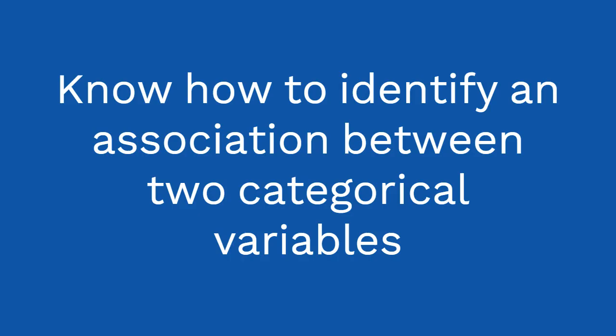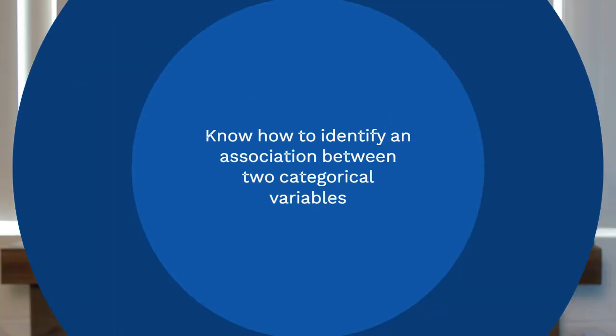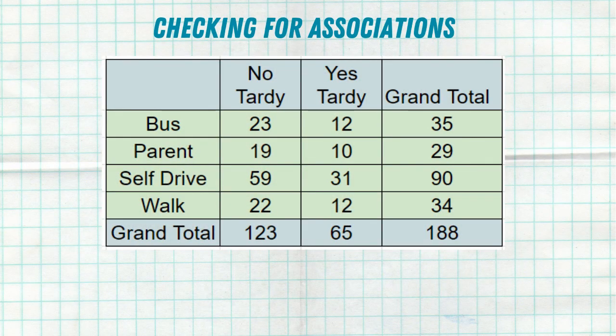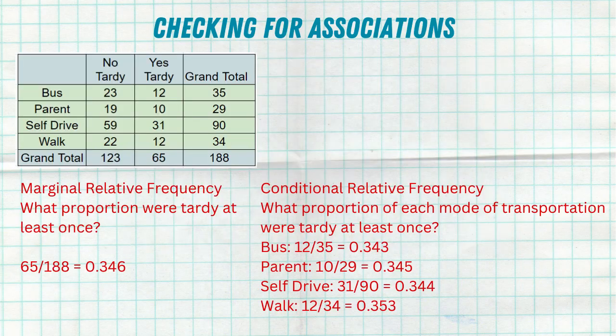Tip number two: know how to determine if there is an association between two categorical variables by looking at a two-way table. This is an extremely important topic that will definitely be on your Unit 2 test and the AP exam. Going back to the tardy example — looking at kids that are tardy, not tardy, and how they got to school — we see all the numbers here. It starts with knowing your marginal distributions versus your conditional distributions.